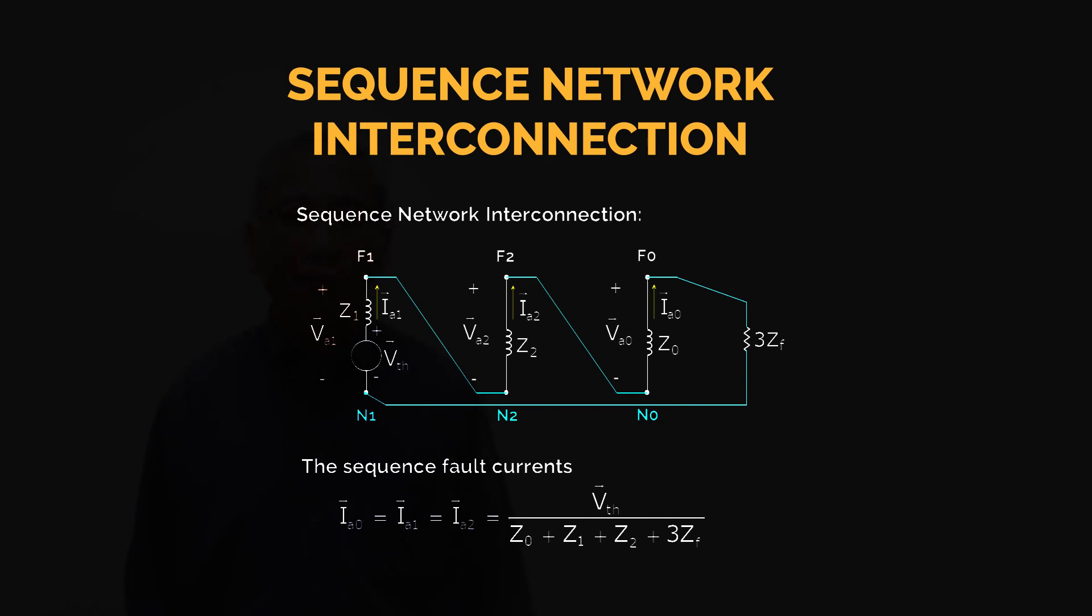From there, the sequence fault currents IA0 equal to IA1 equal to IA2 is equal to the Thevenin voltage divided by the sum of the sequence impedances, including three times the value of the fault impedance. So, VTH over Z0 plus Z1 plus Z2 plus 3ZF.